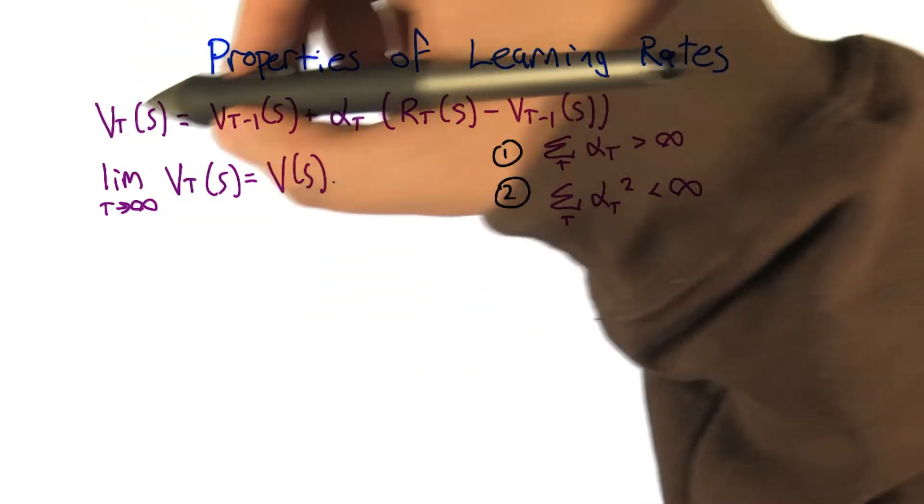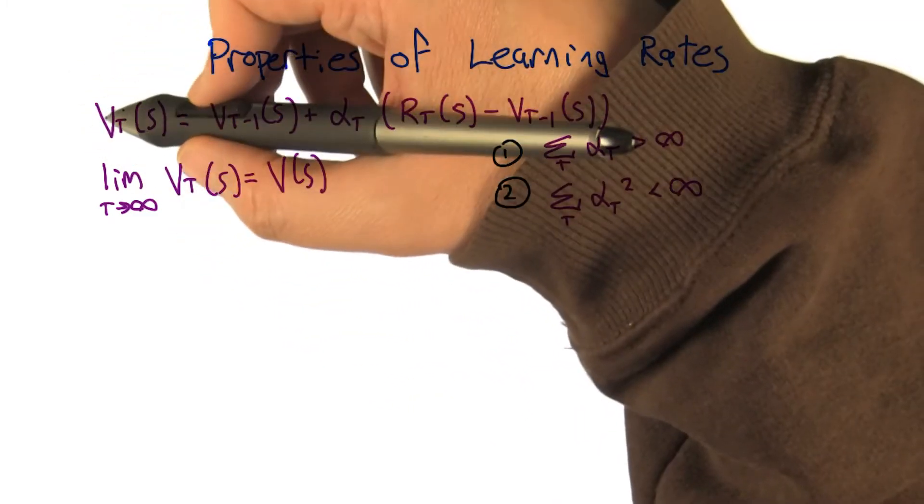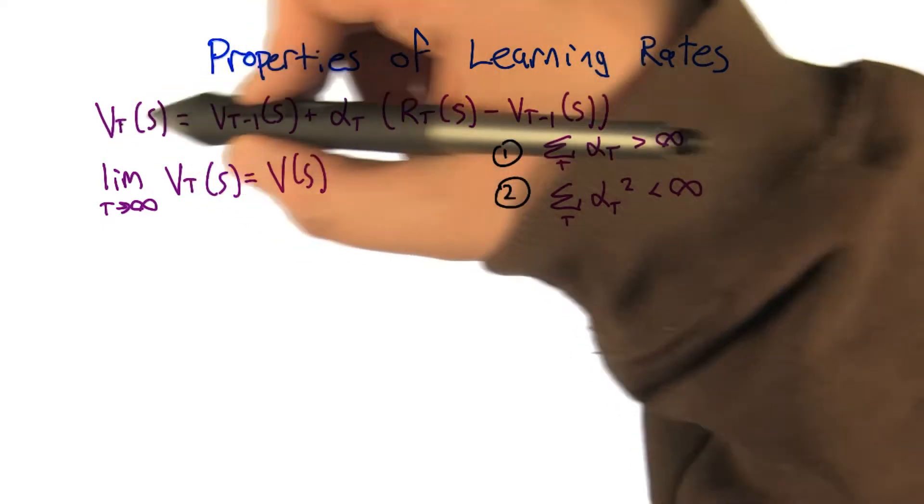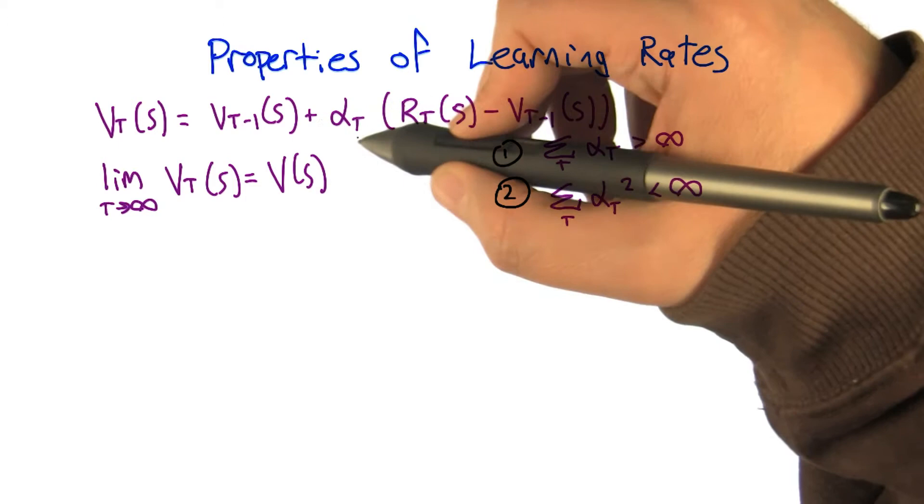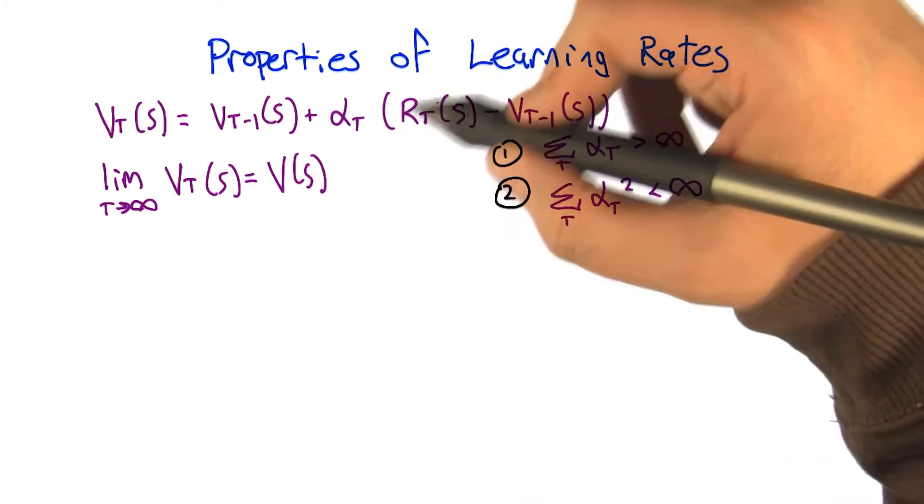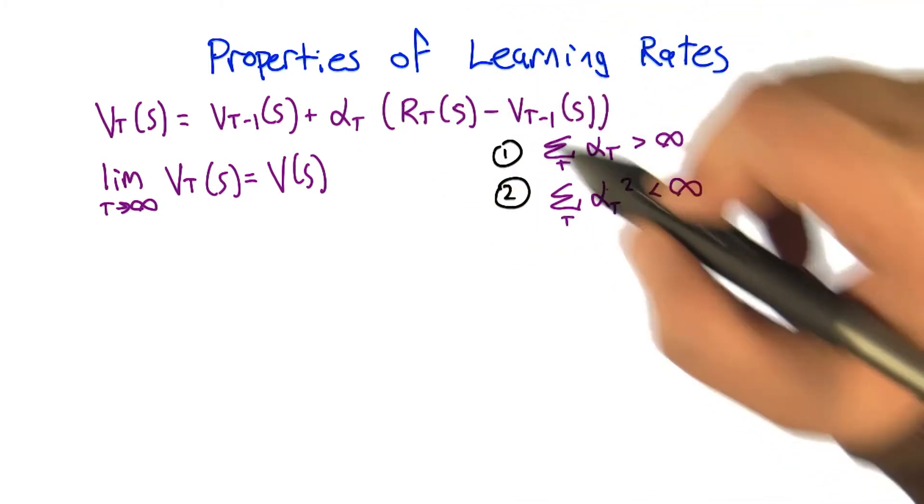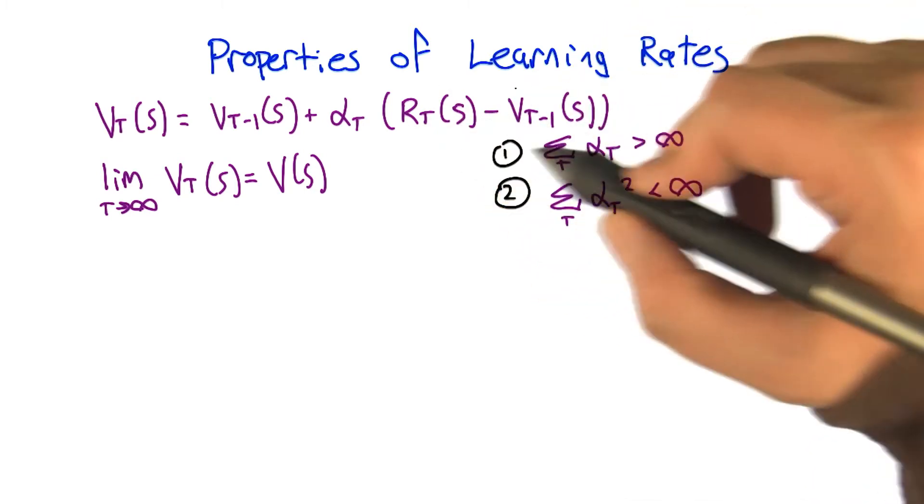So if we have a learning update rule like the one that we have, which is that the value at time t is the value at time t minus 1, plus some learning rate times the difference between the new estimate and the previous estimate, or the new observed value and the previous estimate.